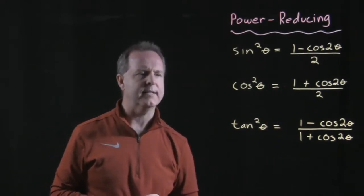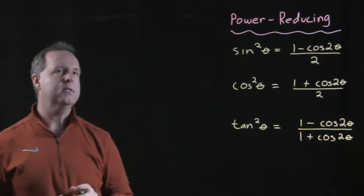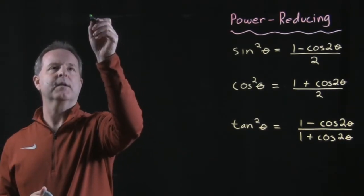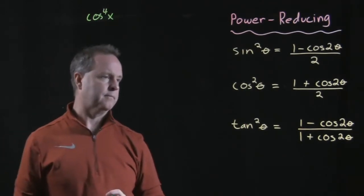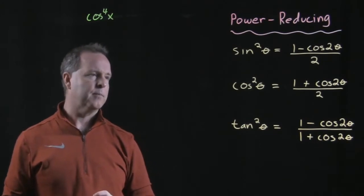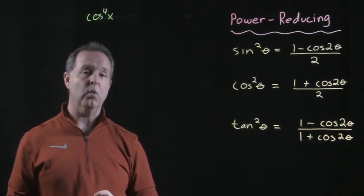So let's look at one as an example of what we might see as we practice these. So let's do something kind of nasty here. Let's look at the cosine to the fourth, cosine of x to the fourth. So let's reduce that down such that my final result has no powers greater than one.